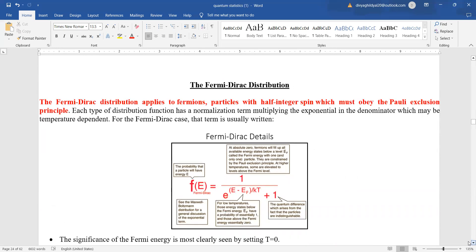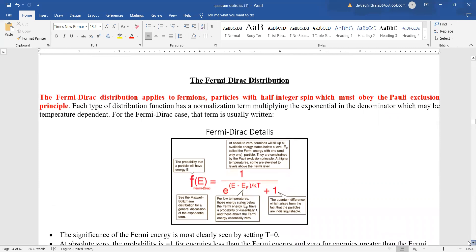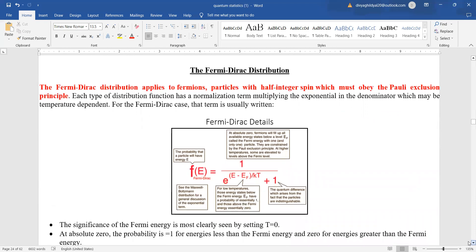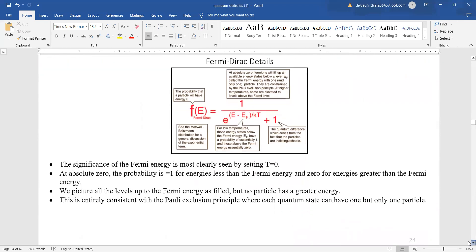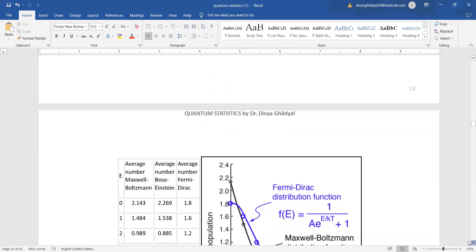Fermi Dirac statistics applies to fermions. It comes under quantum statistics. Particles should have half integer spin. Particles should be obeying Pauli's exclusion principle and the distribution formula is Fe equal to 1 upon e to the power of e minus ef divided by kT, where k is Boltzmann constant.